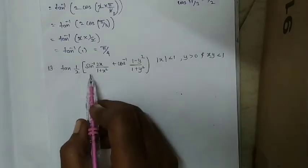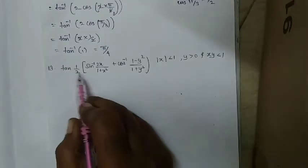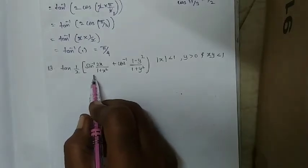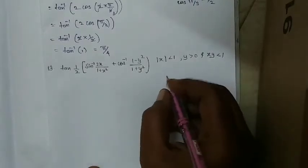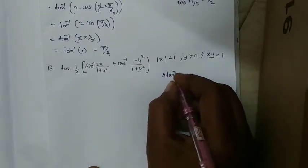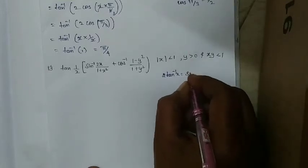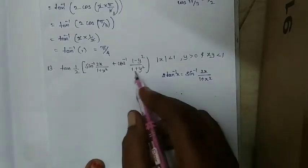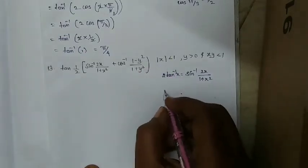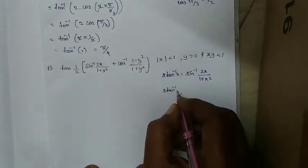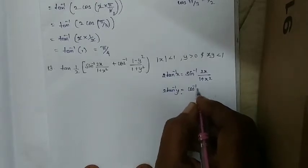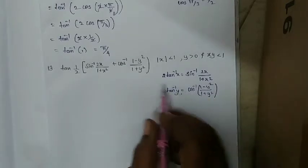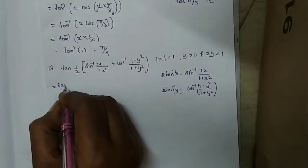If it were tan inverse, we could use tan inverse of tan directly. So we look for a formula relating sin inverse and tan inverse. We know the formula: 2 tan inverse x = sin inverse(2x/(1+x²)). Similarly, 2 tan inverse y = cos inverse((1-y²)/(1+y²)). We can apply these formulas directly.